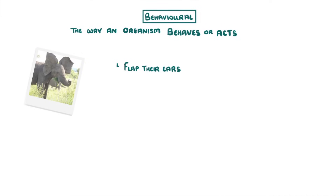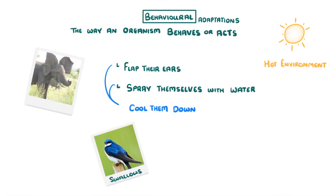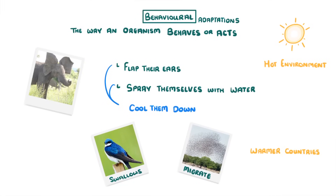Behavioural adaptations are the way an organism behaves or acts. So the fact that elephants clap their ears back and forth and spray themselves with water are behavioural adaptations to the hot environment in which they live, because both of these behaviours are going to help cool them down. Similarly, swallows and some other birds migrate and fly to warmer countries during the winter, which allows them to avoid the cold and lack of food in their summer homes.